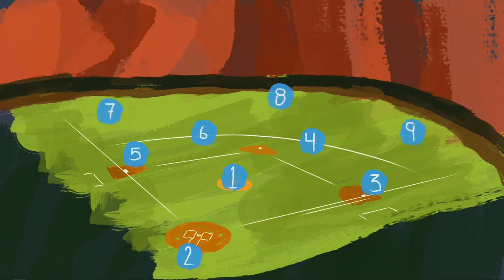Then in the outfield, it is left to right. So the left fielder is 7, the center fielder is 8, and the right fielder is 9.